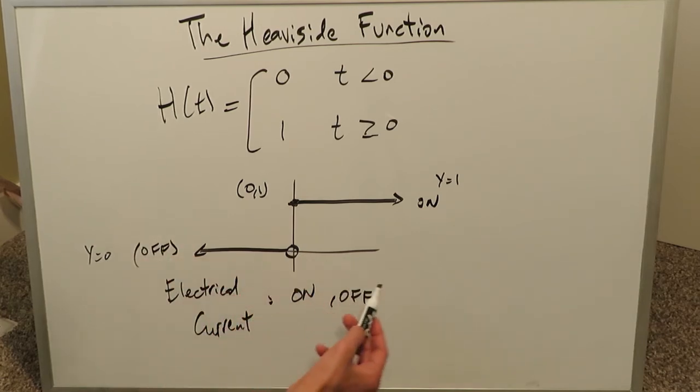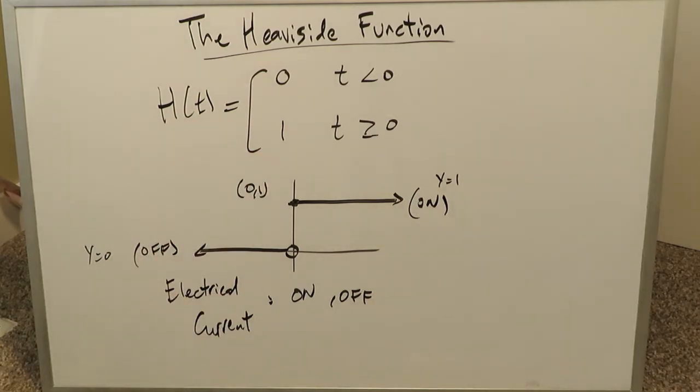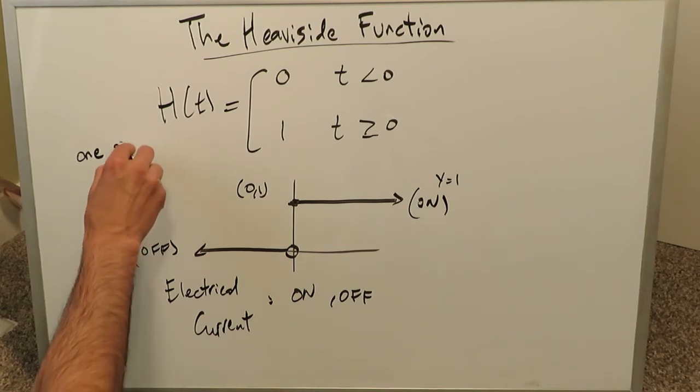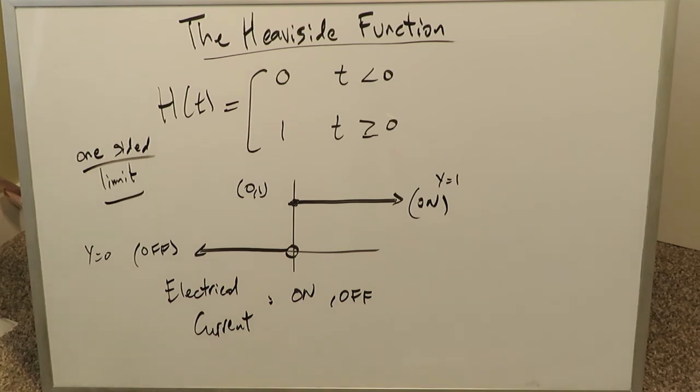Why? Because the off state has a value of zero. The on state here has a value of one. That's one of the primary practical significance aspects of this function. The other one has to do with a concept of one sided limit. I'll talk about that and that will lead us to the end of this video.